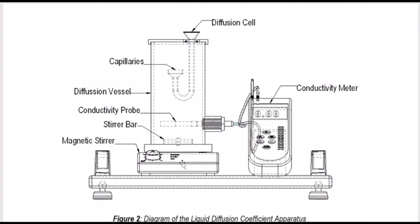Switch on the magnetic stirrer and set the speed knob to 200 RPM, then start the stopwatch. After 10 minutes, record the first conductivity reading, then take readings every 5-minute intervals until 25 minutes. Switch off the magnetic stirrer and conductivity meter, and disconnect both the connector and the mini-phone jack from the conductivity meter. Drain the solution in the diffusion vessel and diffusion cell to the waste tank, and rinse both with clean water. Repeat the whole steps using 2 molar and 4 molar sodium chloride solutions.